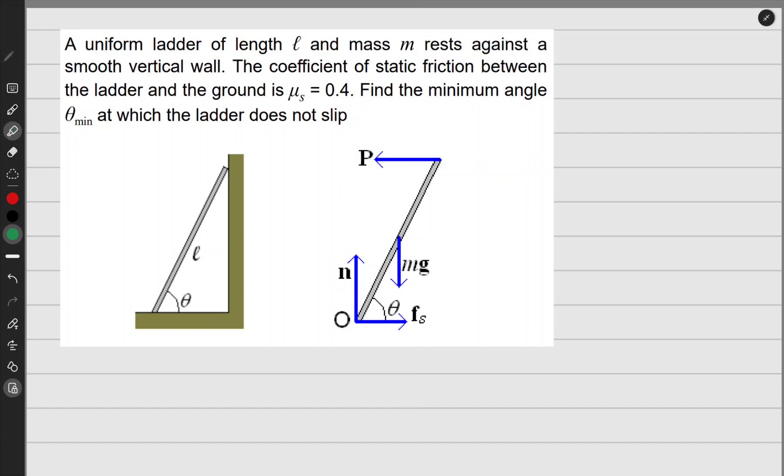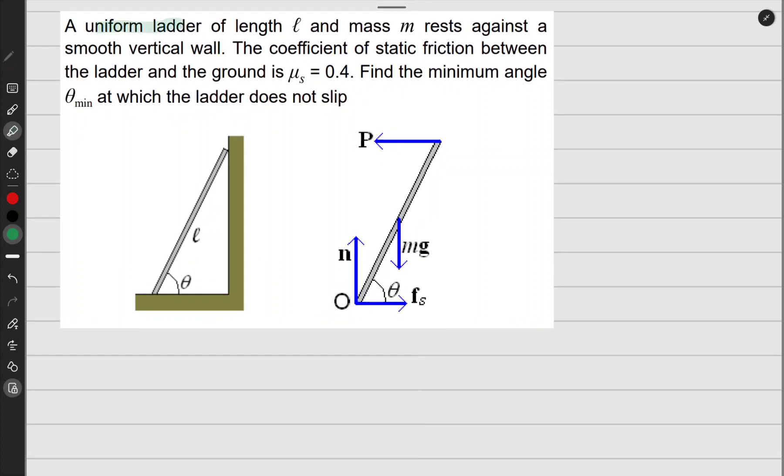A uniform ladder of length ℓ and mass m rests against a smooth vertical wall. So they're implying that here there is no friction, that's why they told us about this smooth.